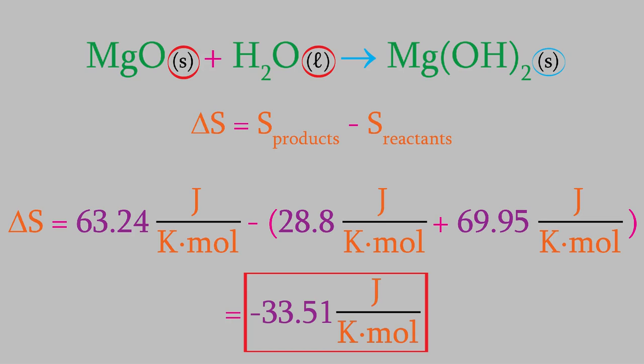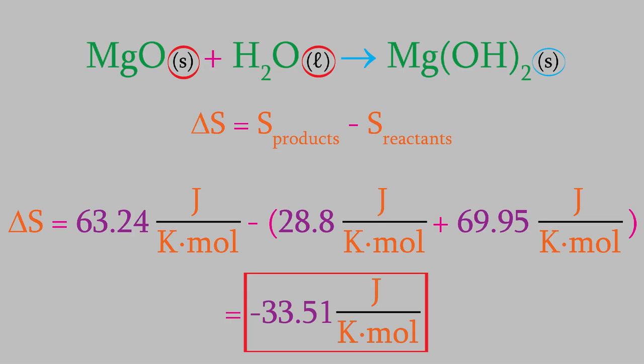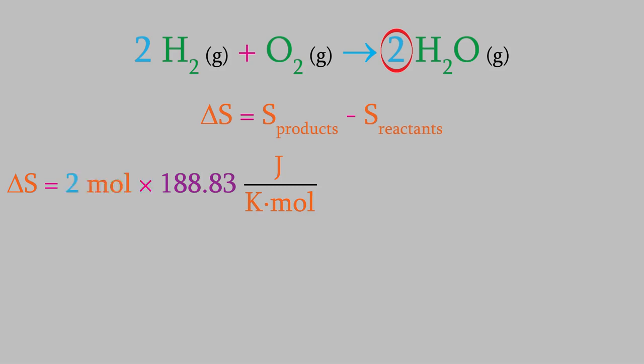Let's try another example. What will be the entropy change for this reaction? Once again, we'll use this formula to determine the entropy of the reaction. The product is water vapor, which has an entropy of 188.83 joules per kelvin mole. But wait, before we move on, notice that the balanced reaction tells us that we have two moles of water vapor, so we'll need to multiply the entropy by 2. Next, we subtract the reactants.